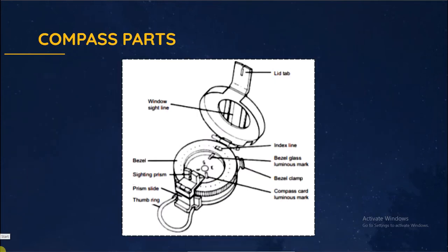Now we discuss prismatic compass parts: lid, hairline or window sight line, which is considered for object in measuring, index line used for reference, bezel, bezel glass luminous mark, bezel clamp, sighting prism used for measuring angle in circular dial, luminous mark showing angle direction, and finally thumb ring used for holding. These are all compass parts.